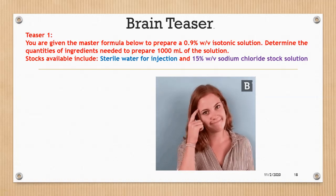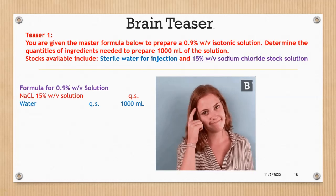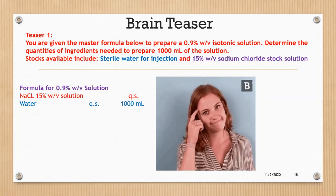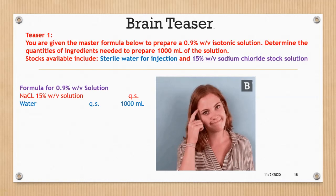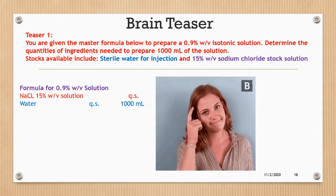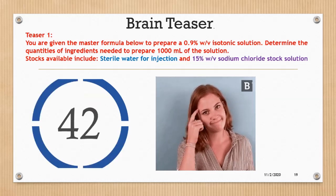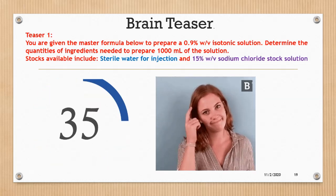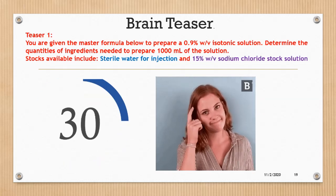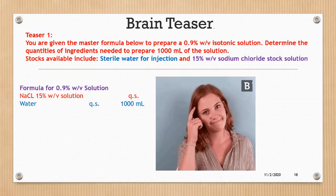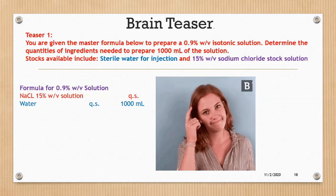Here is a teaser question. You are given a master formula to prepare a 0.9% w/v isotonic solution, and must determine the quantities of ingredients needed to prepare 1000 mL. The available stocks are sterile water for injection and 15% w/v sodium chloride stock solution. Note that the formula states to add a sufficient quantity of 15% w/v solution. Pause the video and attempt the calculation.